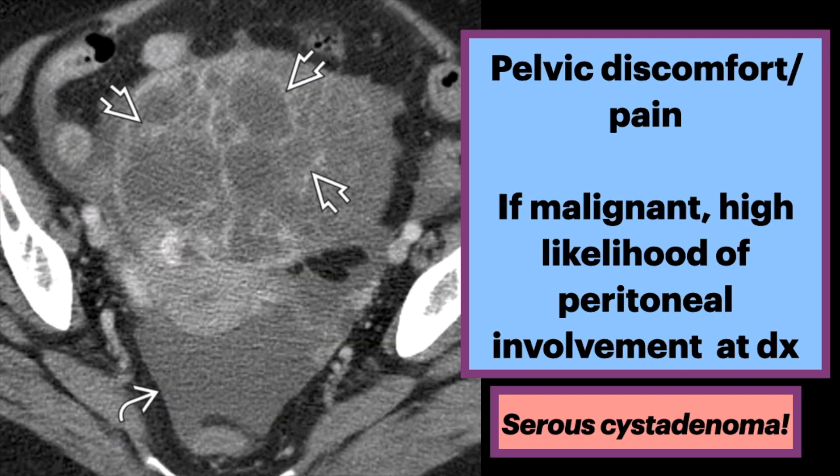Be sure to pay attention to any complications. On this axial CT, there are multiple septations and pelvic free fluid. Pathology showed serous cyst adenoma with necrosis due to torsion.